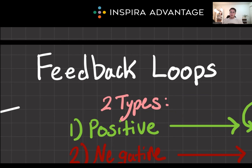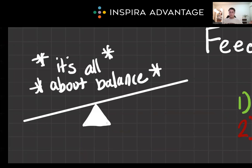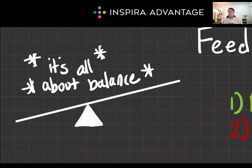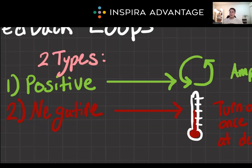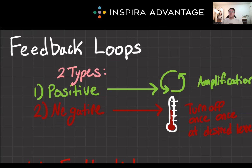Let's start by diving into what a feedback loop is. To understand feedback loops, you want to know that they are all about balance. They're the body's way of keeping things in check, especially when it comes to hormones. There are two types you need to be intimately familiar with for the MCAT: positive and negative feedback loops.